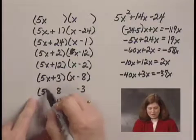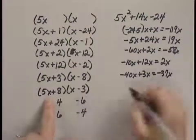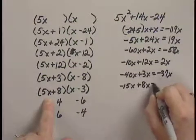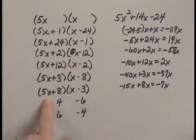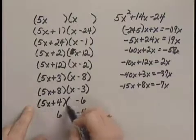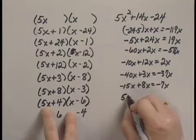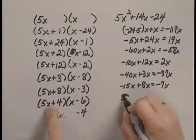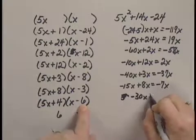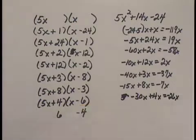I will try (5x + 8)(x - 3). My middle term is -15x + 8x, which is -7x. Again, that's not right. I'll try (5x + 4)(x - 6). My middle term will be 5 times -6, -30x, plus 4x, which is -26x. I hope the last one works.